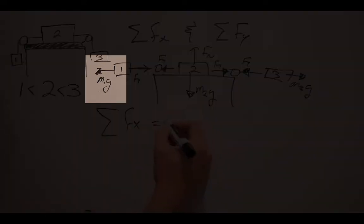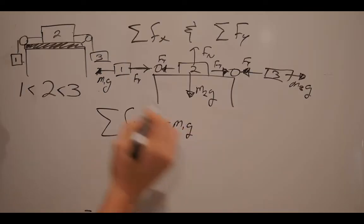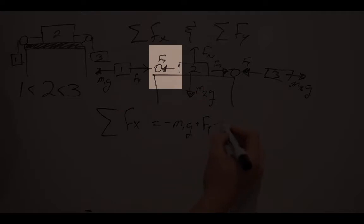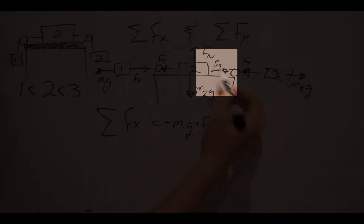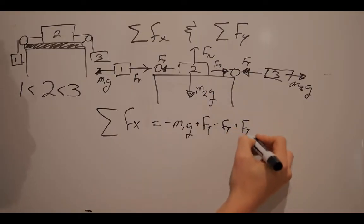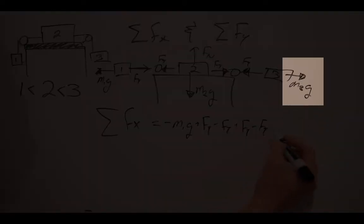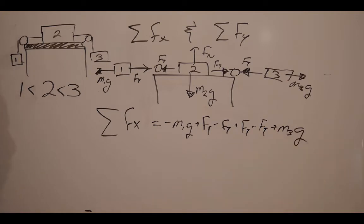We have m1g is pointing to the left, so I'm going to make that negative. Positive ft, negative ft, positive ft, negative ft, and positive m3g. And that easily simplifies because these all cancel out. So, that would be my net force equation.